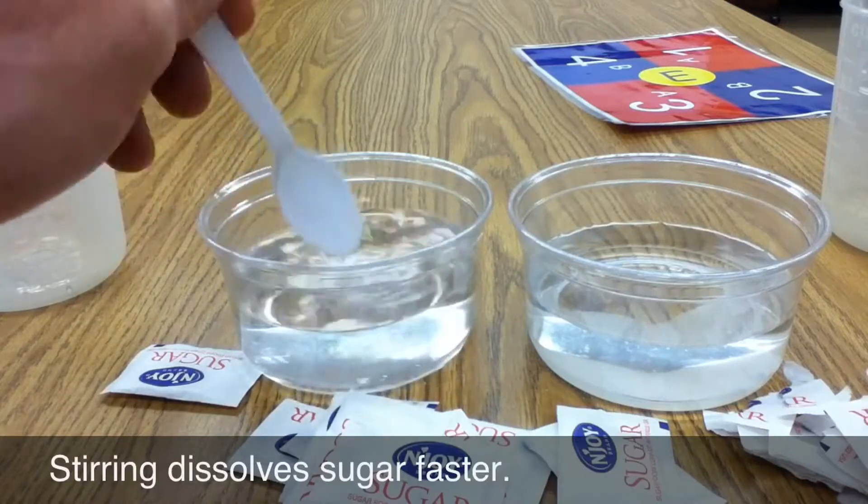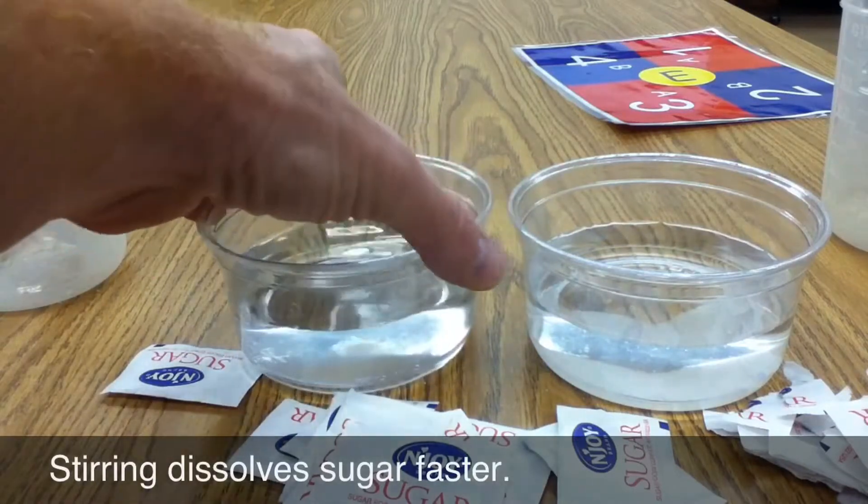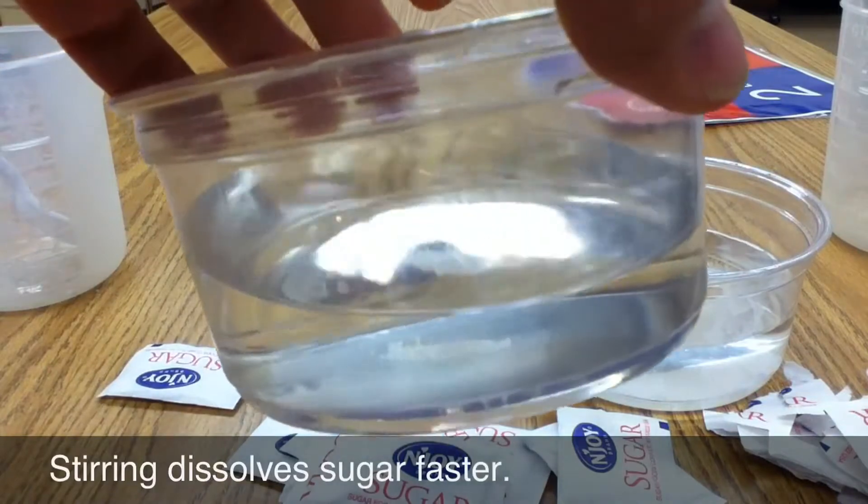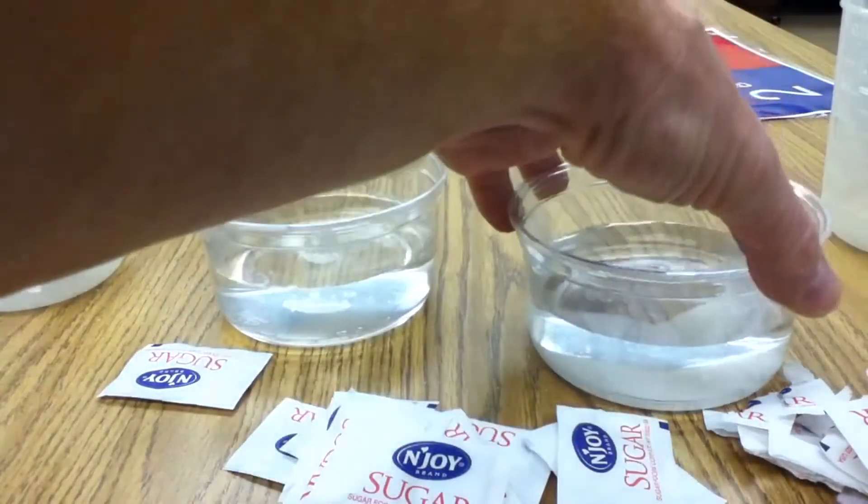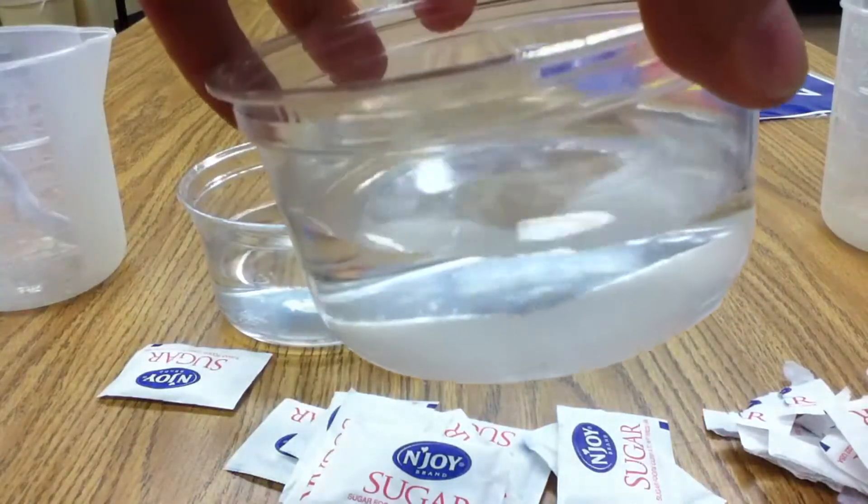What are you observing about the cup on the left? What do you notice about the sugar in the cup that's been stirred? Is there much left? The cup that I didn't stir seems to be almost the same.